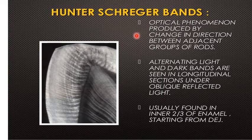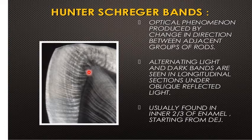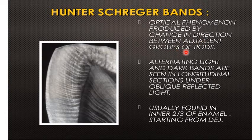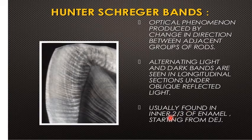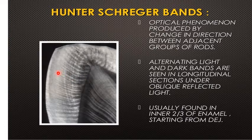Another histological structure seen in the enamel is the Hunter-Schreger band — alternating dark and white bands present from the dentino-enamel junction but not reaching the surface. This is an optical phenomenon produced by the change in direction between adjacent groups of rods. Alternating light and dark bands are seen in longitudinal section under oblique reflected light. They are usually found in the inner two-thirds of the enamel, starting from the dentino-enamel junction, and are seen during reflection of light on the longitudinal ground section of the enamel.